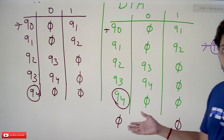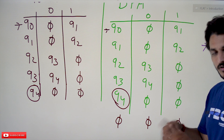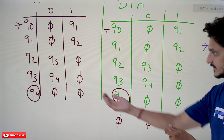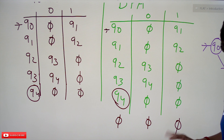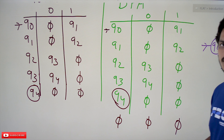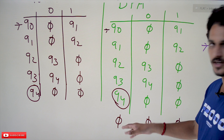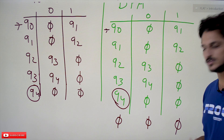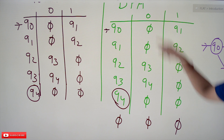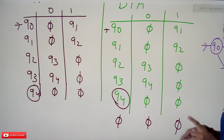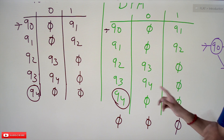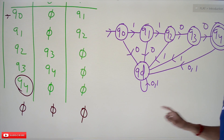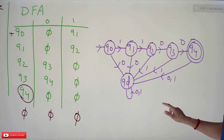Whenever you take Phi, we are moving to Phi and Phi, because no state is considered as no state. If you take 1 or 0 from the dead state, in DFA we move to the dead state Qd. Some textbooks will mention this explicitly, some will not. So: Phi on 0 moves to the dead state Qd, and Phi on 1 also moves to the dead state Qd. This completes our transition table for the DFA.